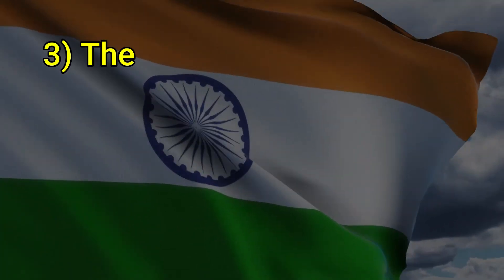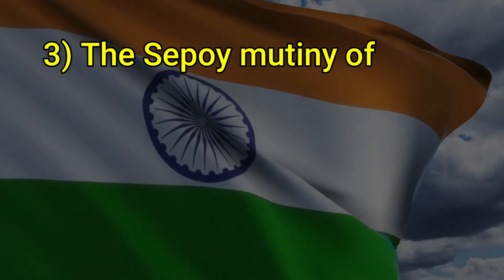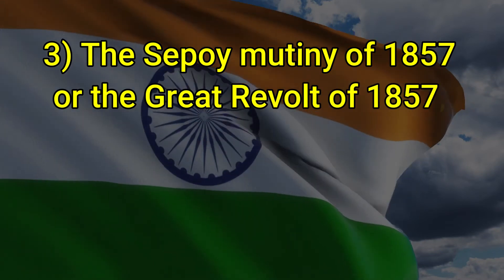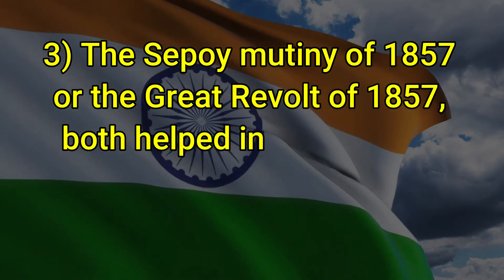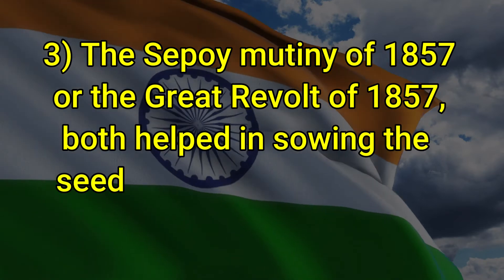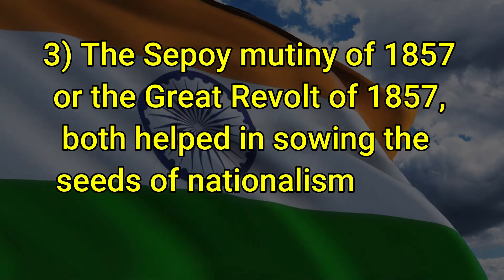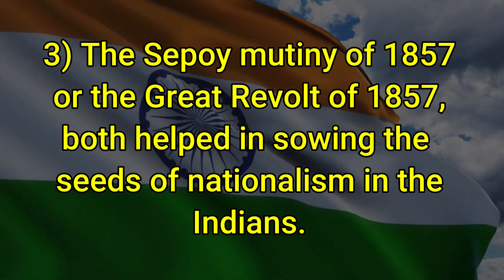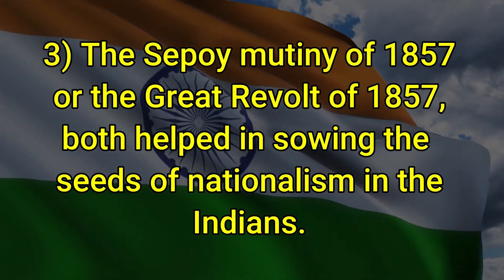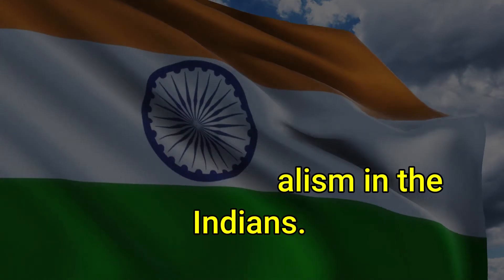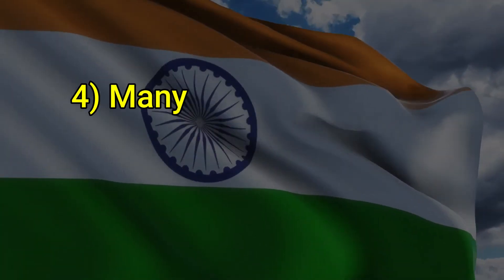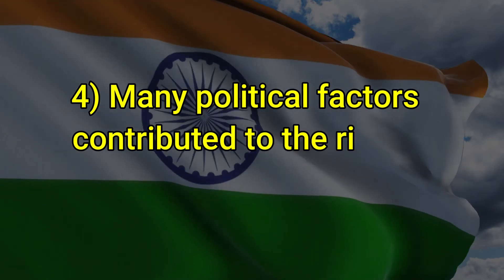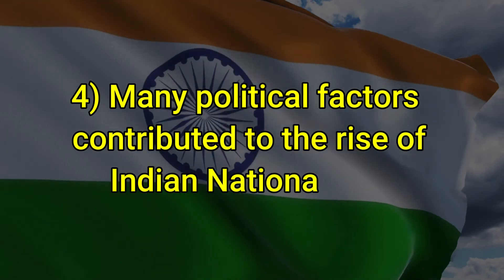The Sepoy Mutiny of 1857, or the Great Revolt of 1857, both helped in sowing the seeds of nationalism in the Indians. Many political factors contributed to the rise of Indian nationalism.